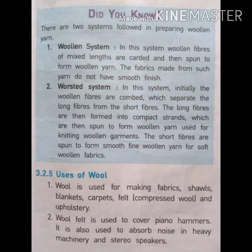There are two systems: the woolen system and the worsted system. In the woolen system, fibers of mixed length are carded and then spun to woolen yarn. The fabrics made from such yarn do not have a smooth, fine finish.